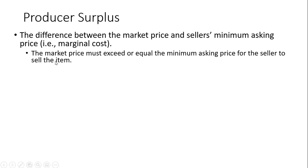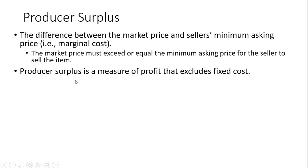The market price must exceed or equal the minimum asking price for the seller to sell the item. Producer surplus is a measure of profit that excludes fixed cost, so producer surplus is not exactly the same thing as profit — it doesn't incorporate or subtract out fixed costs of production.